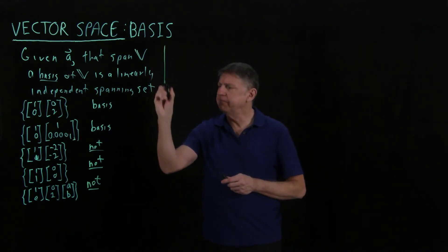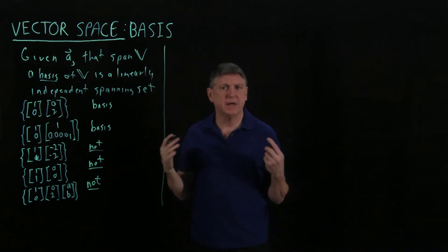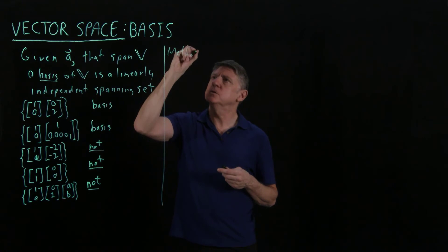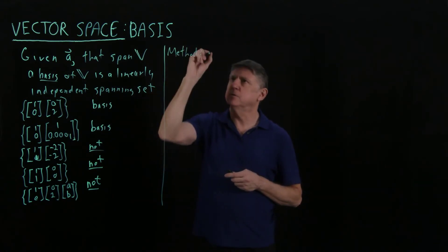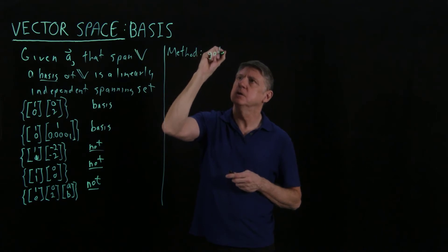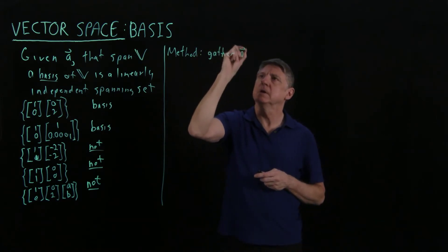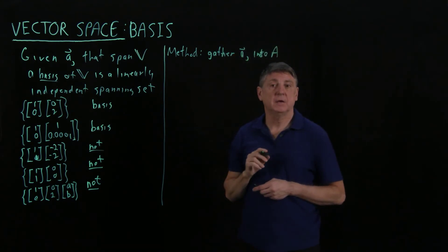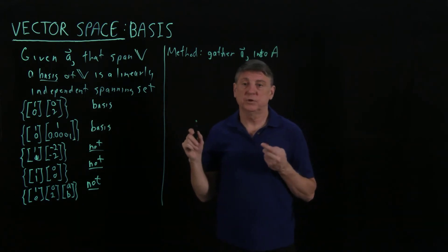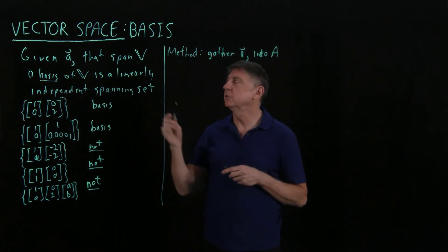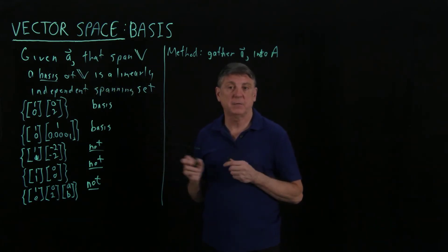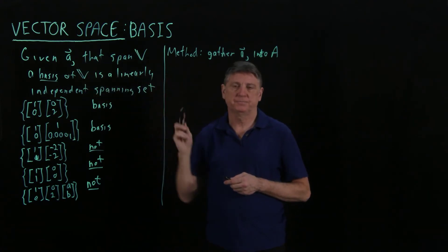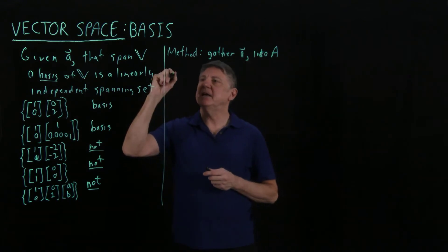How could we find a basis? What's an algorithm? One method that we can use is we can gather all the vectors that we're given, gather these into a matrix A, and for now the order in which we do the gathering doesn't matter. We can do it in the order of appearance, we can do it by whatever method we want.